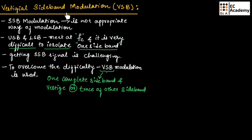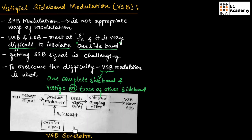This block diagram shows the VSB generator. The VSB generator consists of a product modulator and a sideband shaping filter. The product modulator generates a DSBSC signal, which then passes through the sideband shaping filter. This filter passes one complete sideband along with the trace or part of the other sideband.